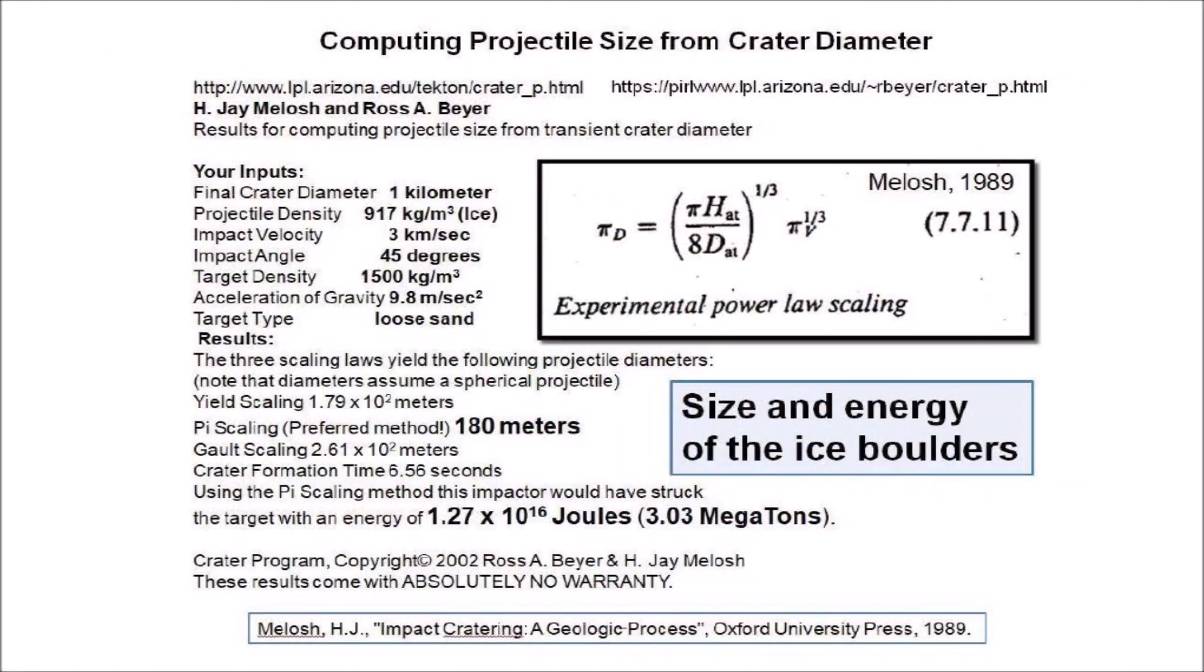The sizes of the projectiles that make the Carolina Bays can be calculated with a program by Professor Jay Melosh and Ross Bayer that uses power-loss scaling equations correlating the energy of an impact with crater size. The calculator requires as input the crater diameter, the impact velocity, the impact angle, and the type of projectile and target material. The scaling laws applied by the program are derived from craters made by nuclear explosions and detonation of dynamite on various types of terrain.